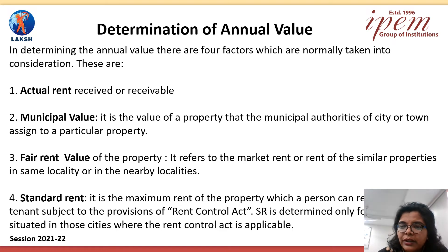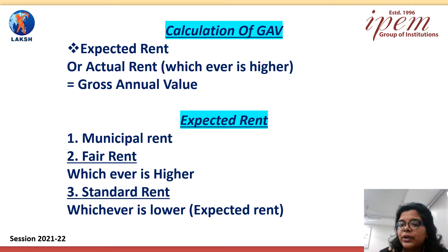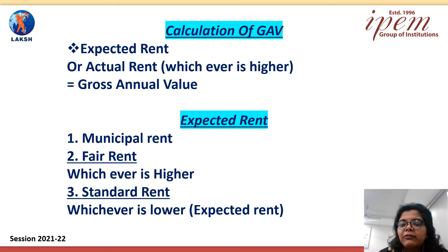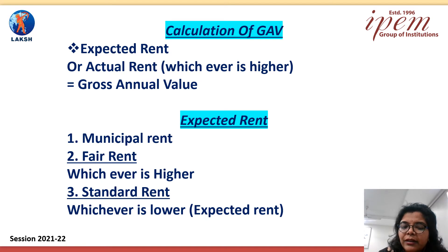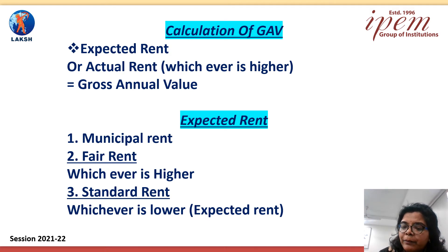Now let us see what is the basic formula to calculate annual value. Here is the formula to calculate gross annual value of the property. First of all, we have to calculate expected rent. Expected rent is calculated by comparing municipal rental value with fair rental value — whichever is higher, we take that further. Then we compare the higher term with standard rent, and whichever is lower, that will be called expected rent. After that, we compare expected rent with actual rent, and we take the higher rent — that higher rent will be called gross annual value.